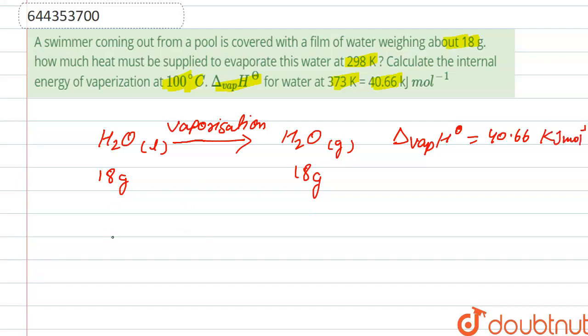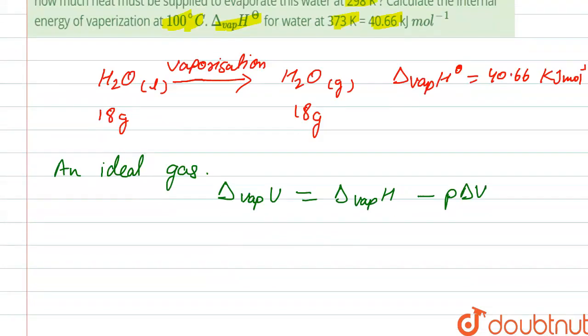And we know that for an ideal gas, the change in internal energy - we have to calculate the internal energy. So the change in internal energy of vaporization is equal to change in vaporization of heat minus P delta V.